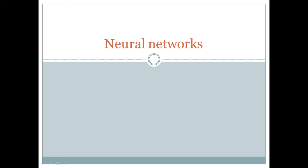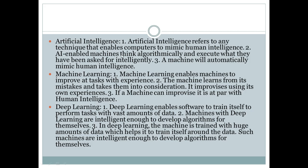We're now going to discuss neural networks, but before we do that, let us discuss machine learning. Artificial intelligence refers to any intelligence that enables computers to mimic human intelligence. AI-enabled machines think algorithmically and execute what they have been asked for intelligently.